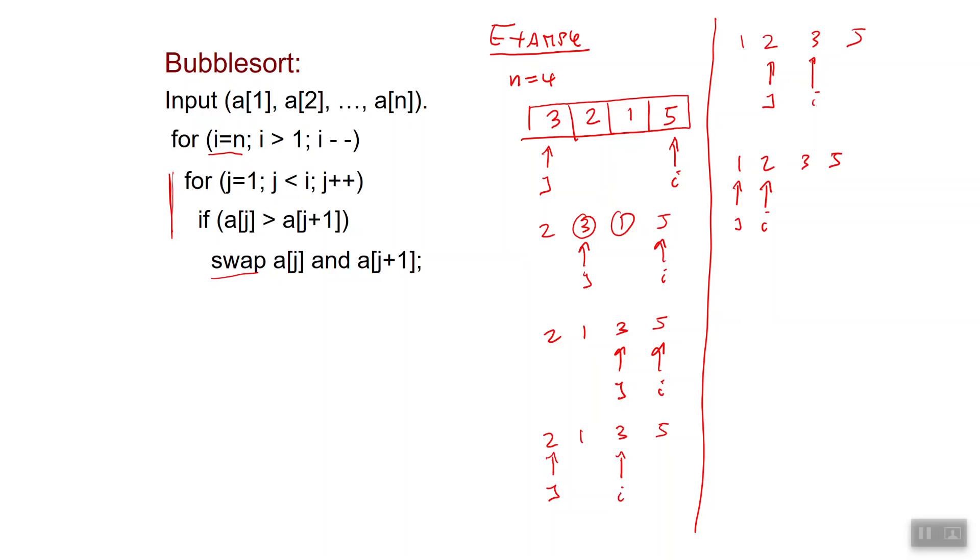Okay, so it's called bubble because these pairwise swaps roughly correspond to bubbles that go up in the sequence. So we want to get a sense of why bubble sort works. Okay, so it's four lines of code, it's not hard to get an intuitive sense of why it works, but let's see how we can argue about it formally.